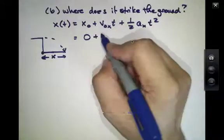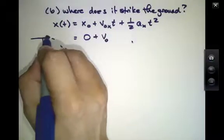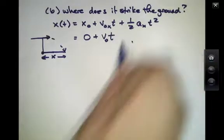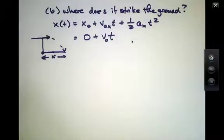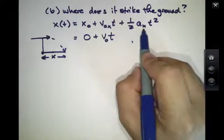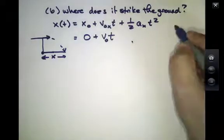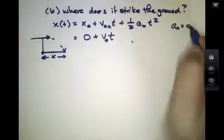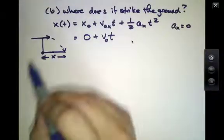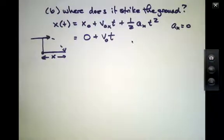v0 in the x direction, well, that's just v0, because our initial speed was off to the side. And the third term here, 1 half a x t squared, a sub x is 0. The ball is only accelerating in the vertical direction, that's down. And in the horizontal direction, it's just executing linear motion.